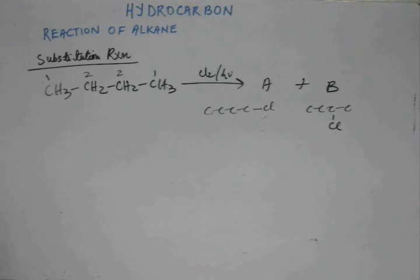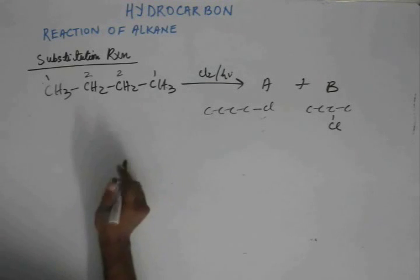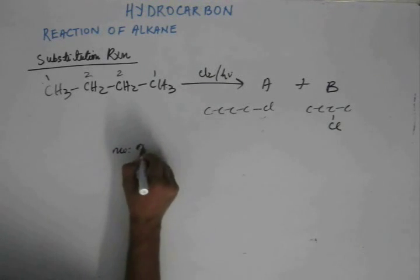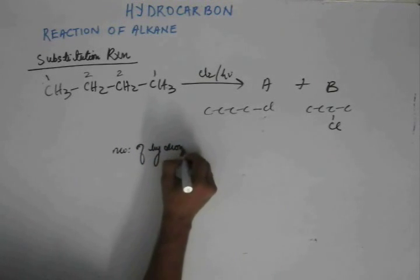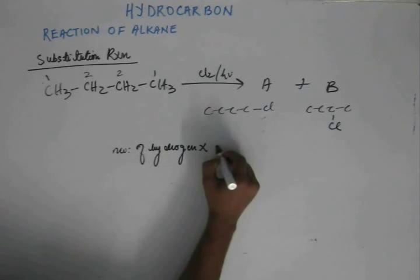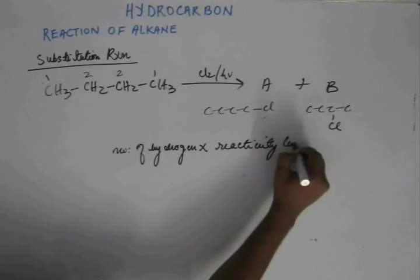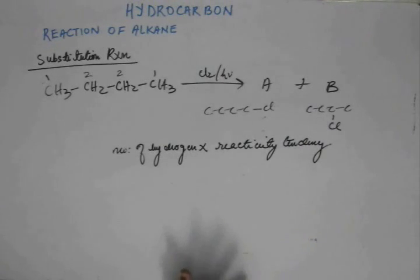To fetch another half of the number we have to identify their percentage. Let me teach you how you would find the percentage. In order to get the percentage, you have to find, let me give you this formula: number of hydrogen into reactivity tendency.